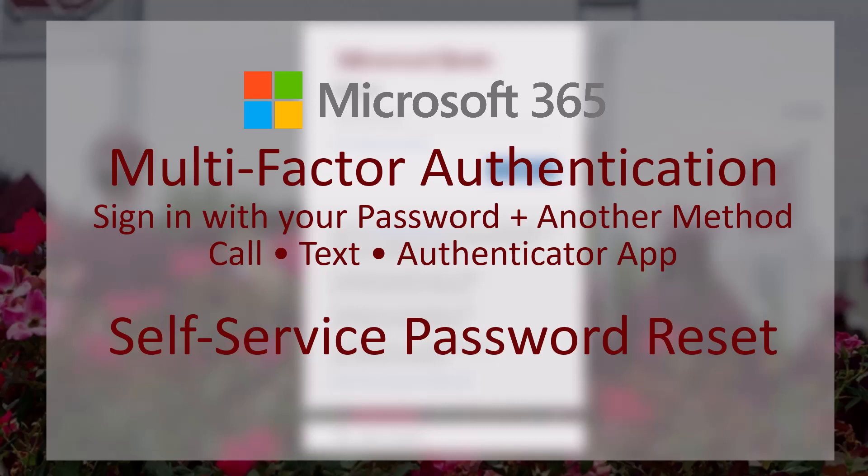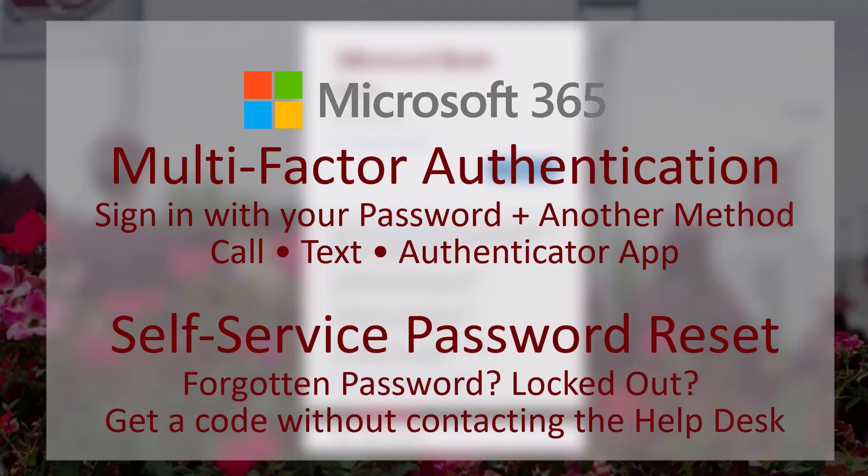This second method can be done by answering a phone call, entering a code sent by text, or by using the Microsoft Authenticator app. Self-service password reset means that when you have forgotten your password or if you are locked out of your account, the system will send you a code to get you back into your account quickly and securely without needing to contact the help desk.